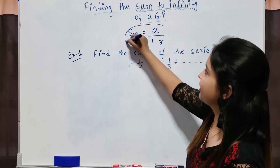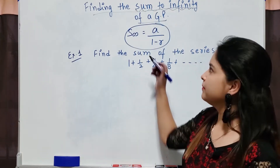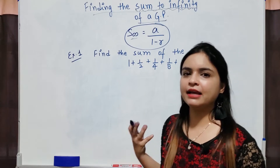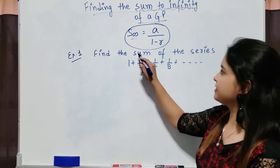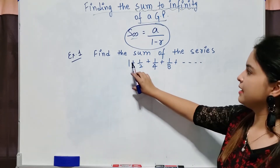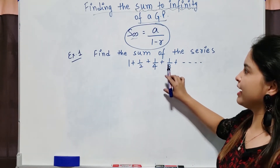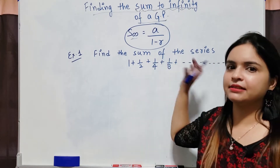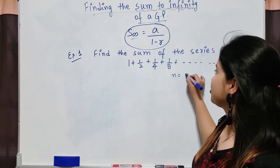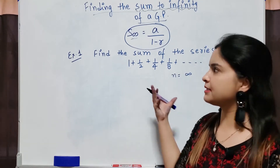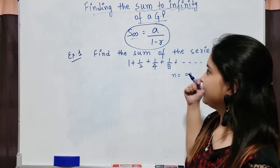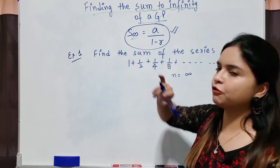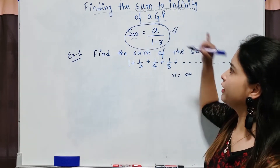We are going to use this formula to find the sum to infinity. What do you mean by sum to infinity? When the number of terms is not given. Suppose the question is: find the sum of the series 1 + 1/2 + 1/4 + 1/8 + ... up to infinite terms. That means n is infinity. In that question you will use S∞, and the formula is a over 1 minus r.